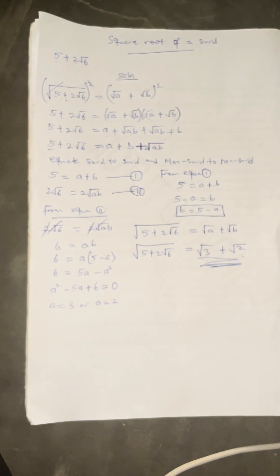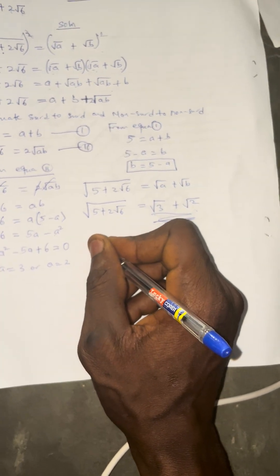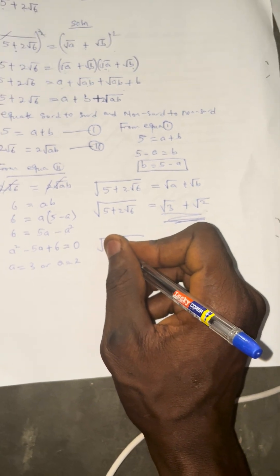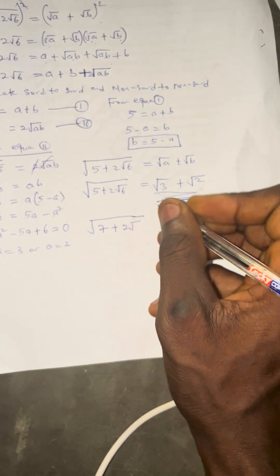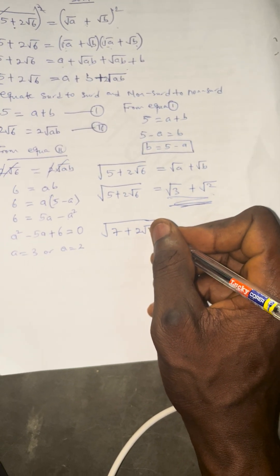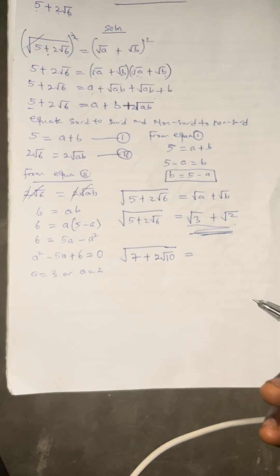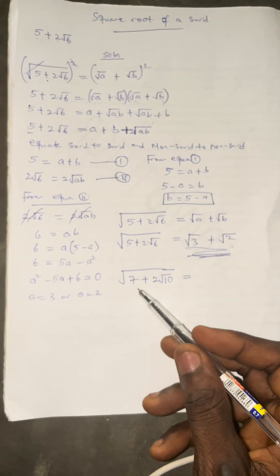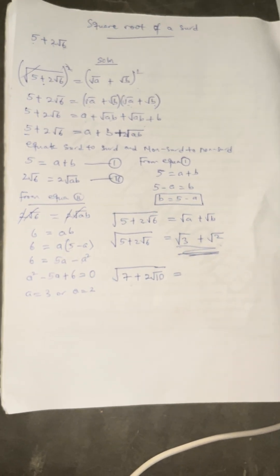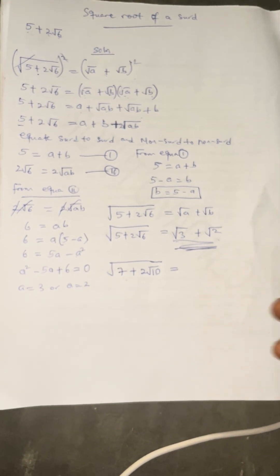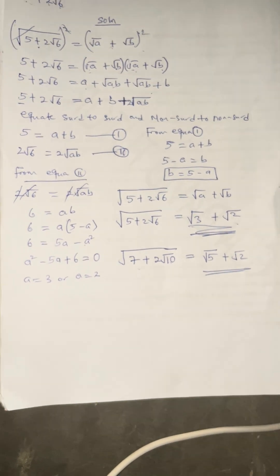Using the shortcut for another example: find the square root of 7 plus 2 root 10. Think of two numbers that add to give 7 and multiply to give 10. That is 5 and 2, since 5 plus 2 equals 7 and 5 times 2 equals 10. So the final answer is root 5 plus root 2.